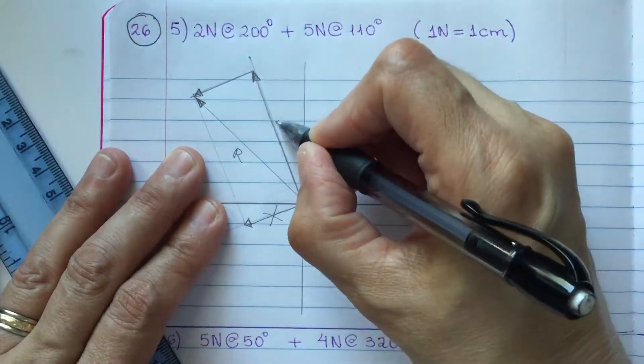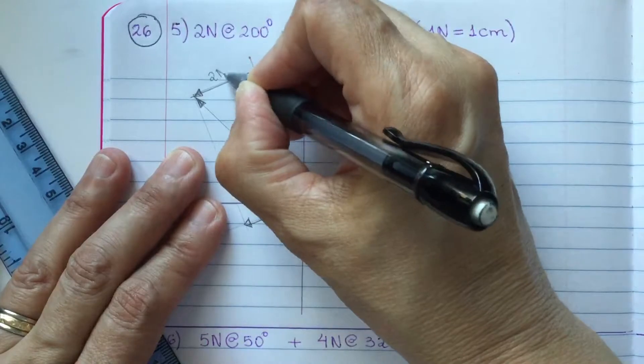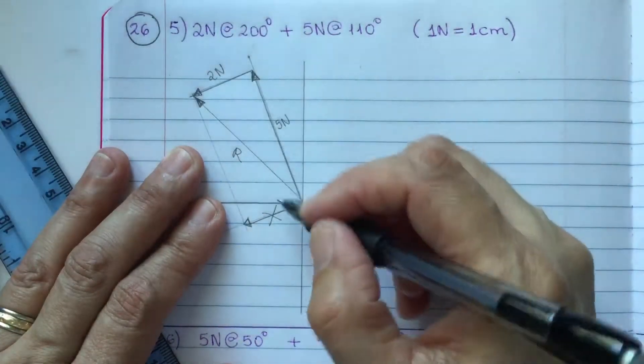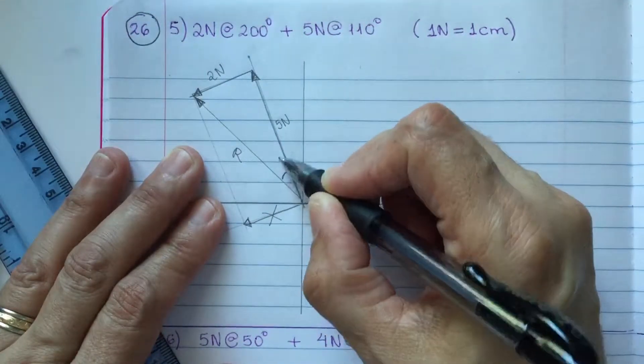So, this is your 5 newtons, and this is your 2 newtons. Now, you are going to place an X between both tails.